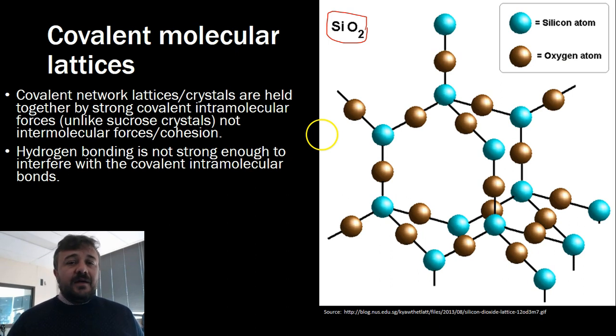Our covalent network lattices tend not to be soluble, and because they're not soluble, there's no free ions and there's no free electrons. So they aren't conductive either.